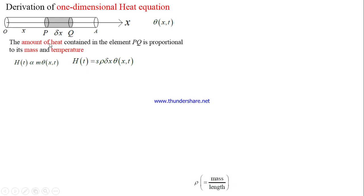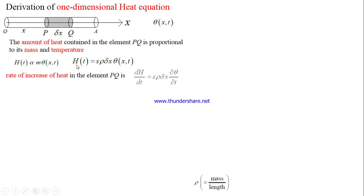If H(t) represents the amount of heat contained in element PQ, then the rate of increase of heat in element PQ is given by dH/dt = s·ρ·Δx·∂θ/∂t. We have this partial derivative because θ depends on two independent variables.